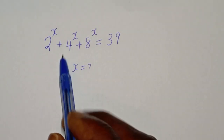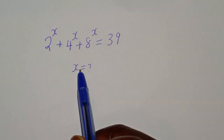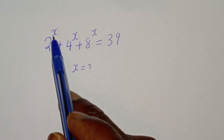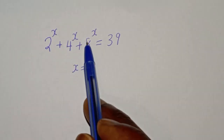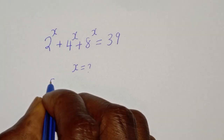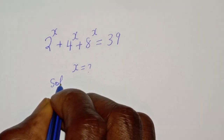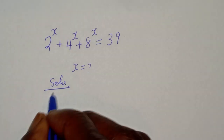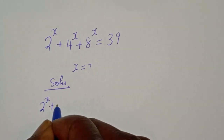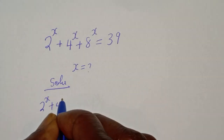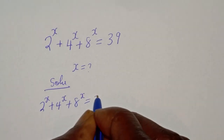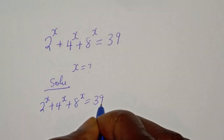Hello, welcome to Magist. In this class we want to find the value of s from this given equation: 2 raised to power s plus 4 raised to power s plus 8 raised to power s is equal to 39.